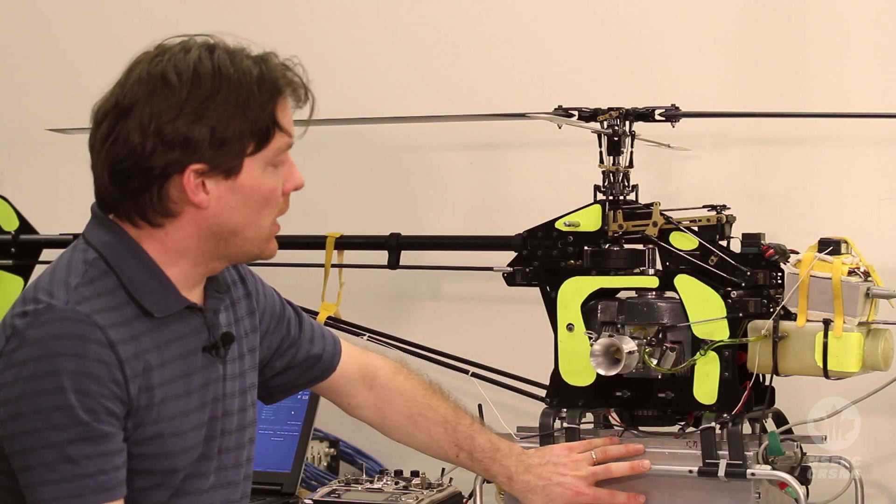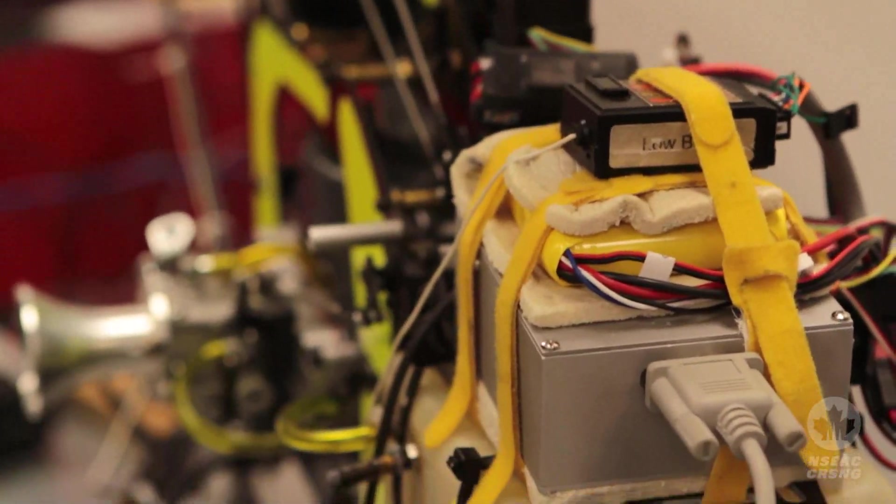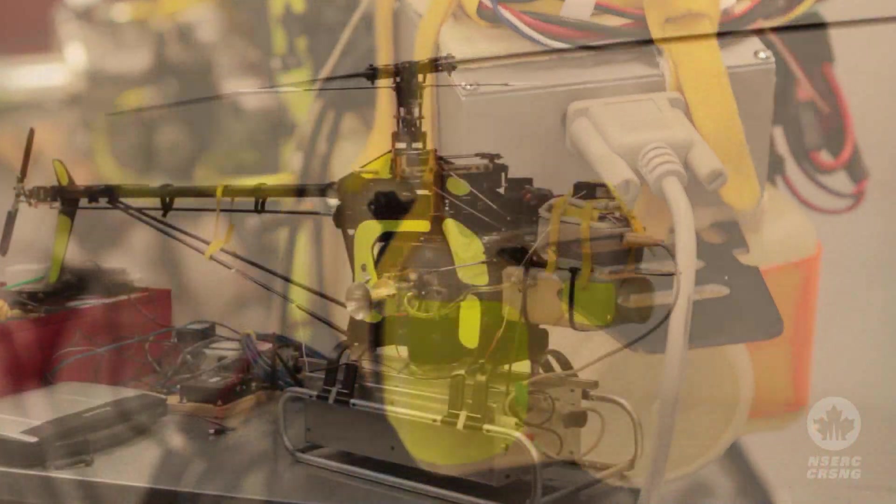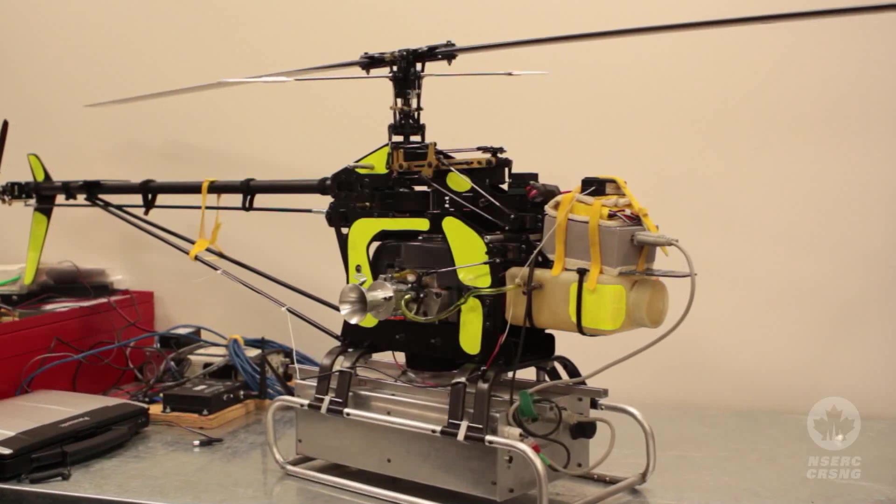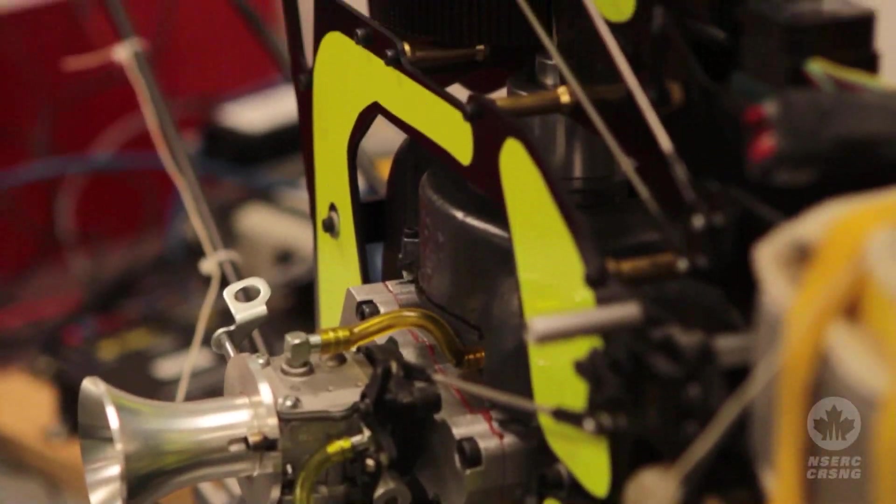The avionics system provides an embedded computer and a bunch of sensors including gyros, accelerometers, GPS, magnetometer. And these sensors are key for the system to be able to sense its configuration.